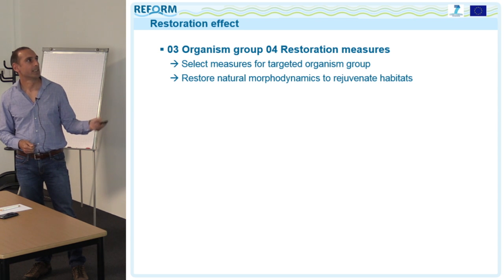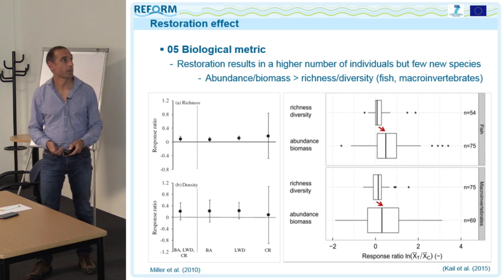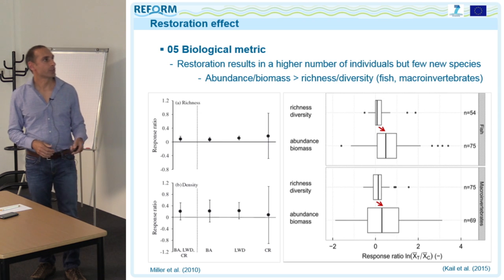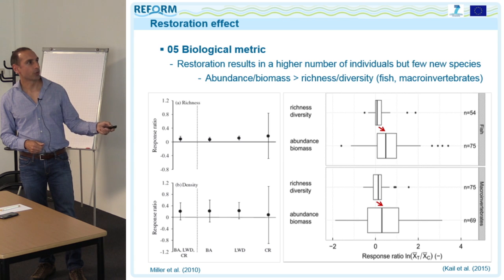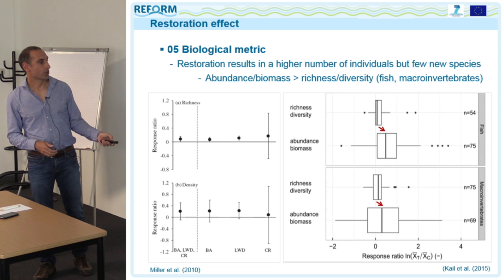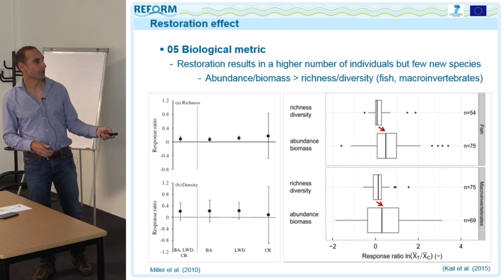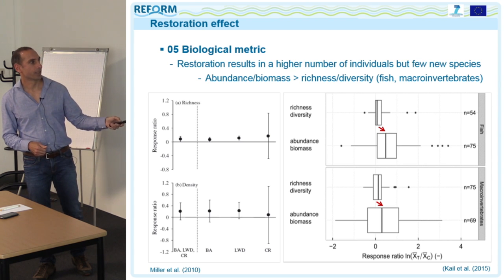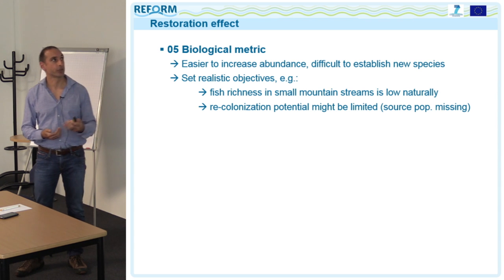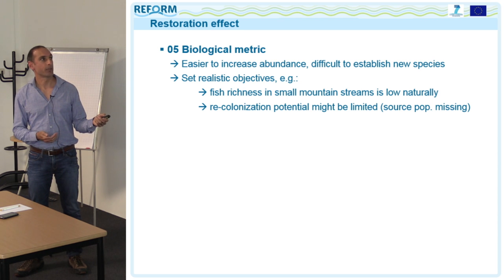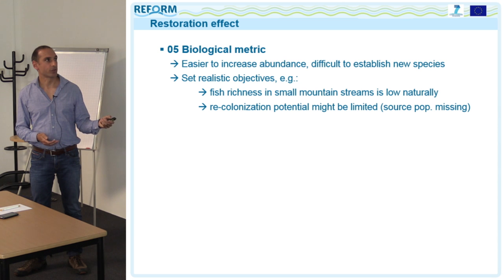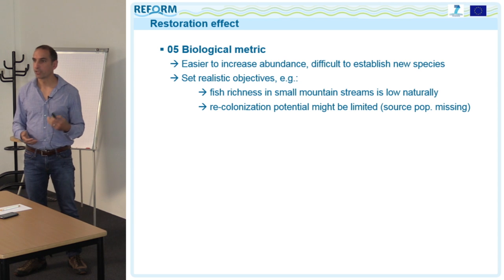It is also wise to restore natural morphodynamics to rejuvenate habitats. Looking at different biological metrics, we found the effect on abundance and biomass is larger than the effect on richness and diversity, at least for fish and invertebrates. Other authors found similar results. We conclude it is generally easier to increase the abundance of species already present than to establish new species. Therefore, you should set realistic objectives — for example, in small mountain streams, naturally low fish richness means you cannot expect large effects on richness.